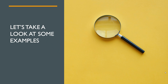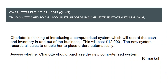Let's take a look at some examples of these six markers from the 2019 exam. The first one — Charlotte — was part of an incomplete records income statement question where there was some stolen cash, which you should have already been able to calculate. Obviously, one of the problems with these six markers is that if you haven't been able to do the computational part first, you are going to really struggle. So we need to make sure we're good at the computational stuff. The question here is that Charlotte is thinking of introducing a computerized system to record cash and inventory in and out of the business. It's going to cost £12,000 and will record all sales to enable her to place orders automatically — essentially a stock control system. And we've been asked to assess whether Charlotte should purchase the new computerized system or not.